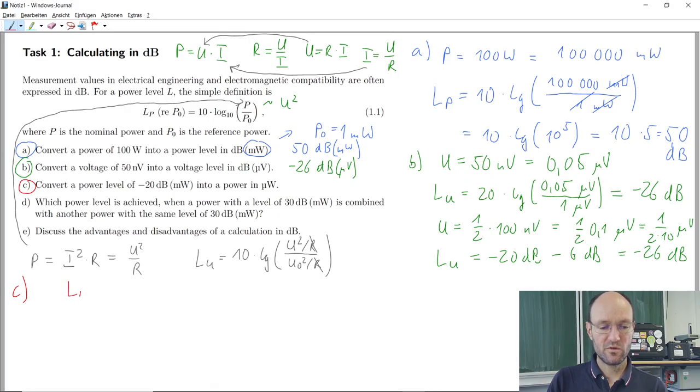I will maybe just rewrite the equation. And so now we want to get this here. We want to get the power. We know the reference power because the reference power is this one here, and we know the power level because the power level is this one there. So what do we do?